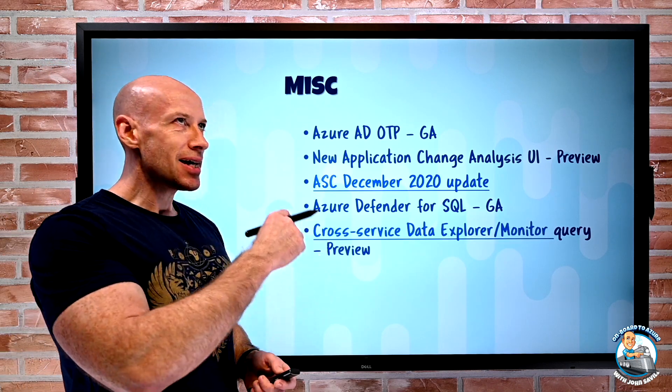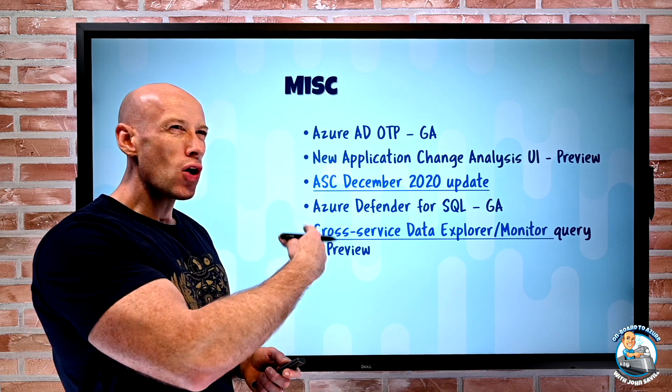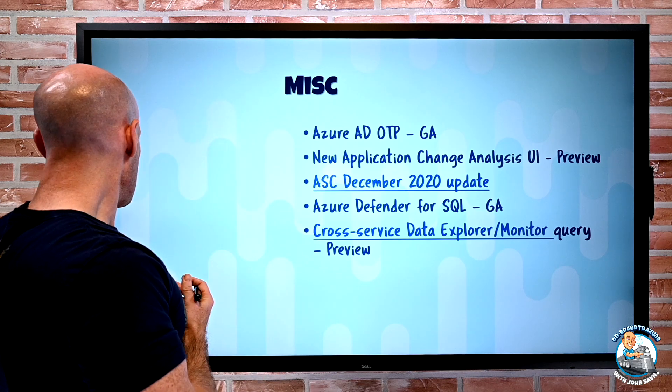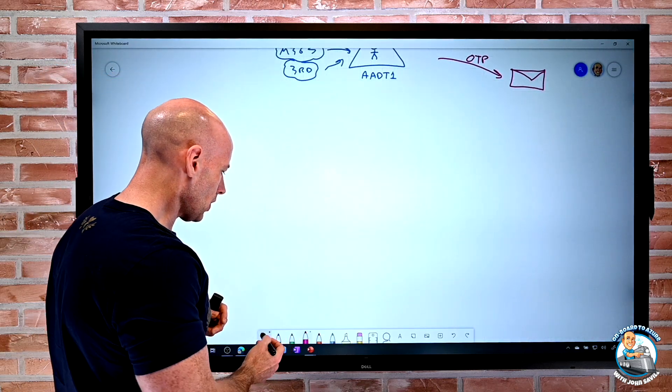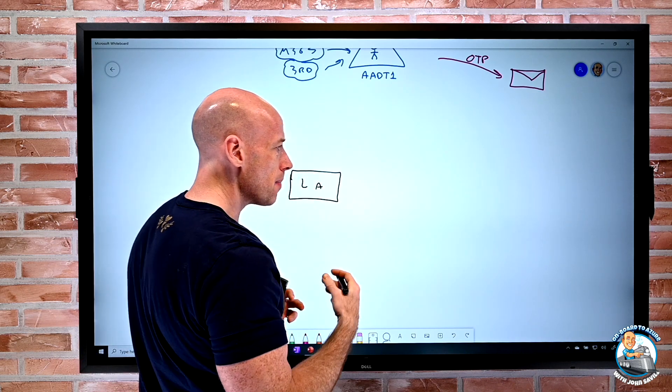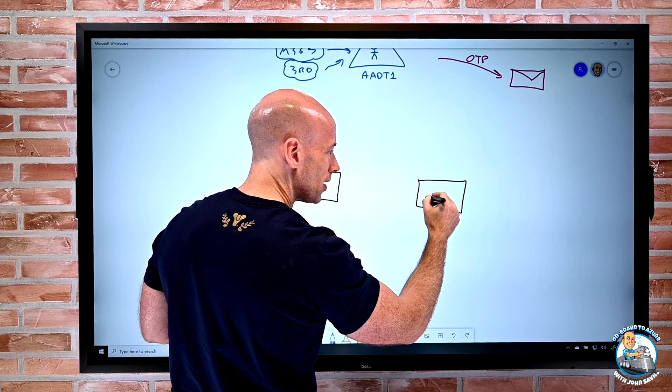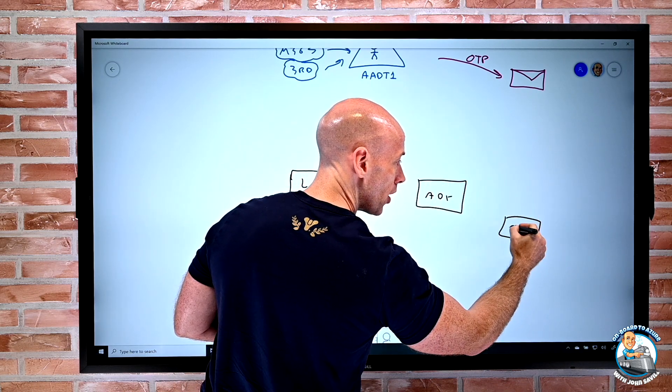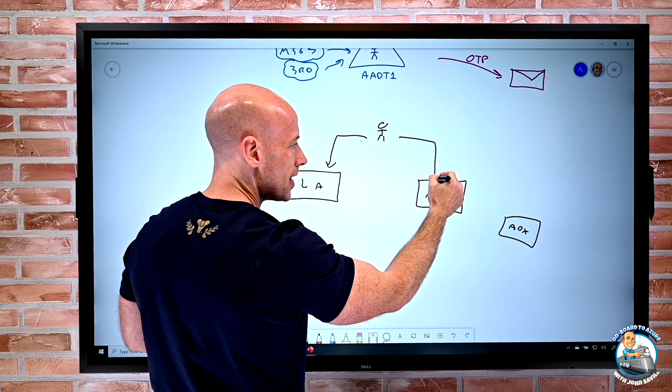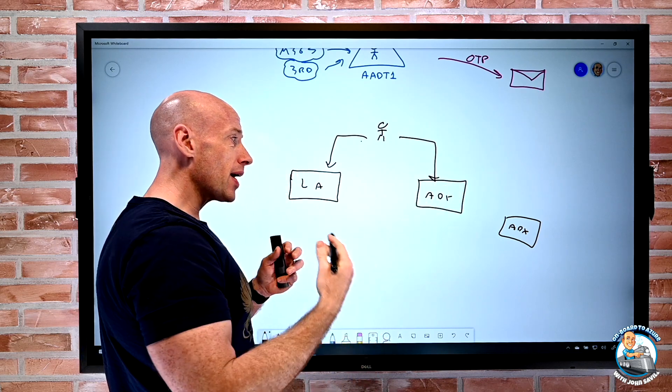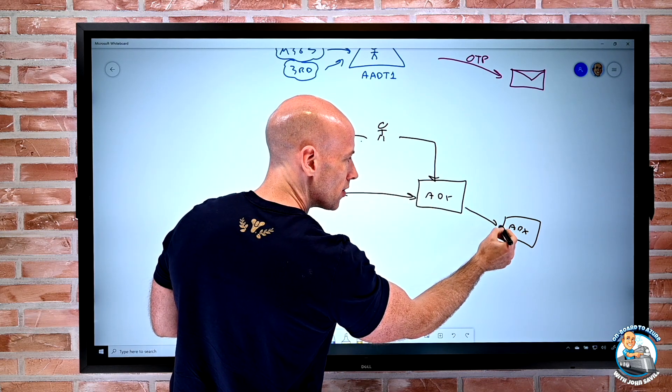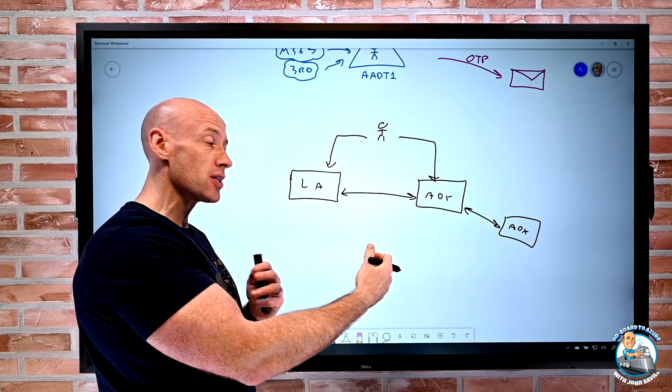Cross-service data explorer, log analytics, i.e. Azure Monitor query is now in preview. This is all about the idea that, hey, I can think about, well, I might have a log analytics workspace. I might have an Azure data explorer environment. I might have multiple of those. And then I've got some user doing queries against the log analytics API, against the Azure data explorer. And what I could now do is within whatever one I'm doing, I can actually now do cross workspace queries, i.e. I could think about joins across these.